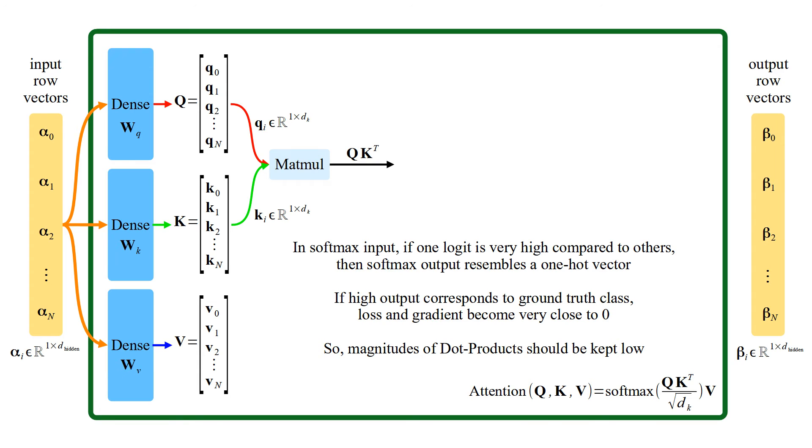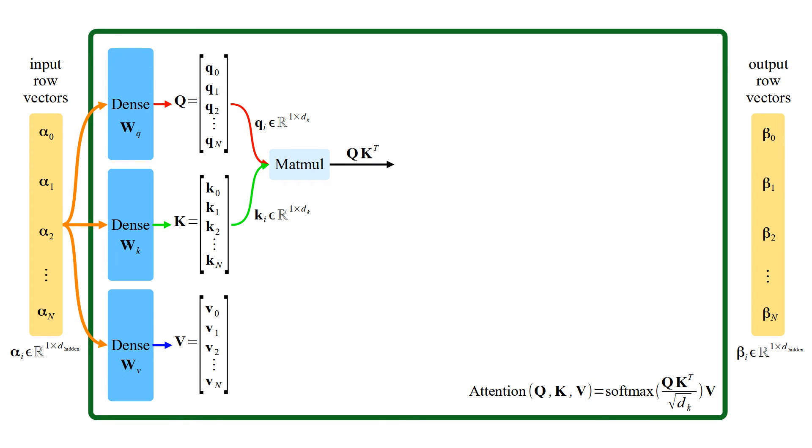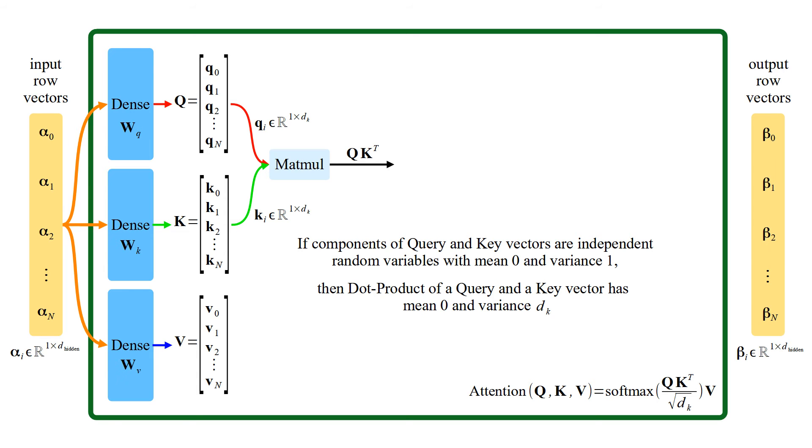So, magnitudes of dot products should be kept low. If components of query and key vectors are independent random variables with mean zero and variance one, then dot product of a query and a key vector has mean zero and variance dk. Dot product is scaled by 1 over square root dk to keep the variance at one.